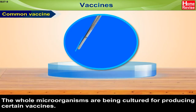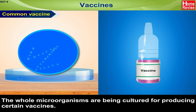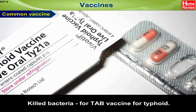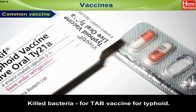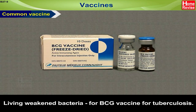The whole microorganisms are being cultured for producing certain vaccines. Two common vaccines obtained by growing bacteria are: killed bacteria, for TAB vaccine for typhoid, and living weakened bacteria, for BCG vaccine for tuberculosis.